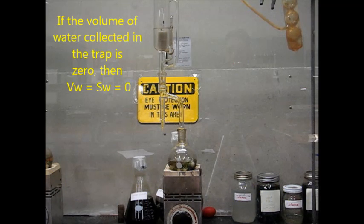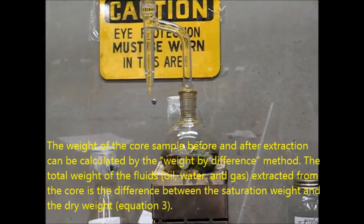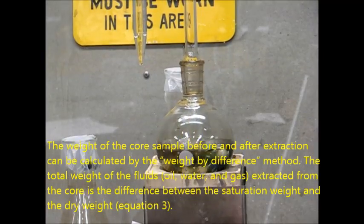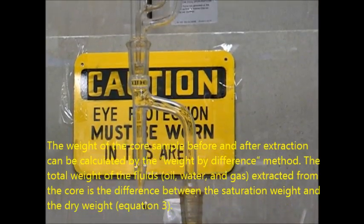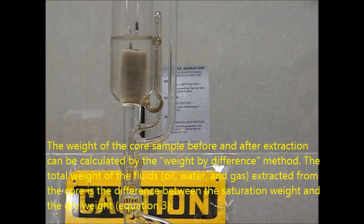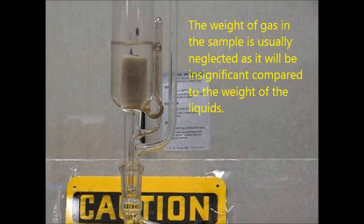The weight of the core sample before and after extraction can be calculated by the weight by difference method. The total weight of the fluids - oil, water, and gas - extracted from the core is the difference between the saturation weight and the dry weight. The weight of gas in the sample is usually neglected as it will be insignificant compared to the weight of the fluid.